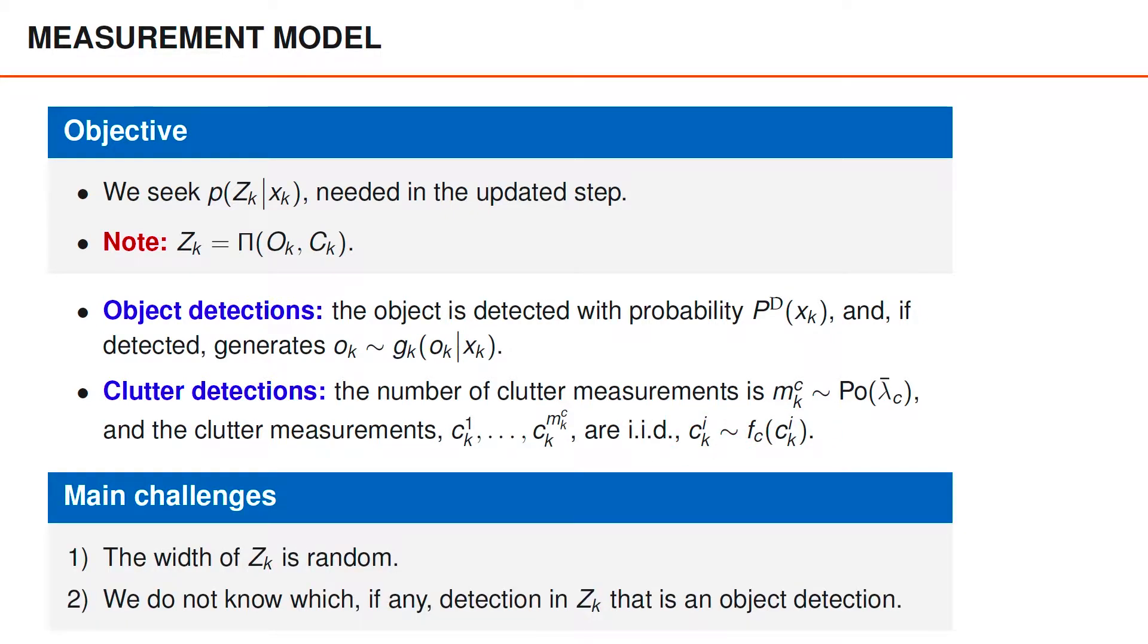So how can we use these models to find a model for z_k? Well, there are two things that make this challenging. The first is that the width of z_k is random. That is, not only does it contain random elements, but the size of the matrix is also random. The second is that we don't know which, if any, measurement in the matrix z_k is an object detection.